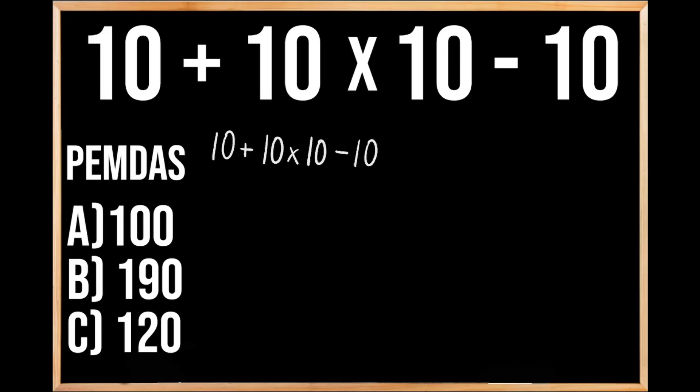So a lot of people, when seeing this problem, will just work from left to right. So first, they're going to add 10 plus 10, which we know gives us 20, and then they're going to multiply that 20 by 10, which we know is going to give us 200, and then they're going to subtract 10 from 200, which is going to give us 190.